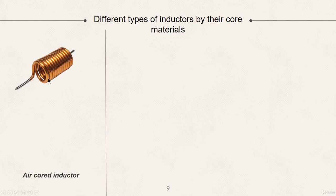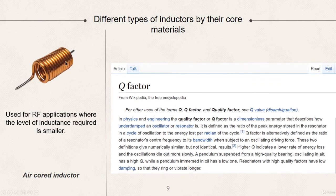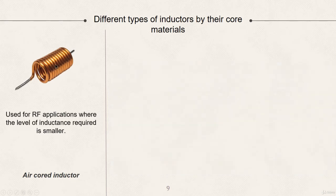So, the first one is the well-known air core inductor. This type of inductor is normally used for radio-frequency applications where the level of inductance required is smaller. And the fact that no core is used has several advantages. For example, there is no loss within the core as air is lossless. And this results in a high level of quality factor, denoted as Q, assuming the inductor or coil resistance is low.